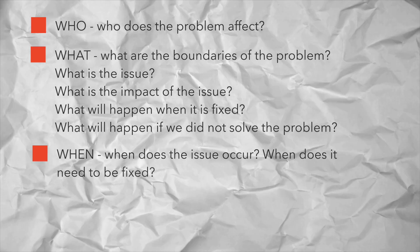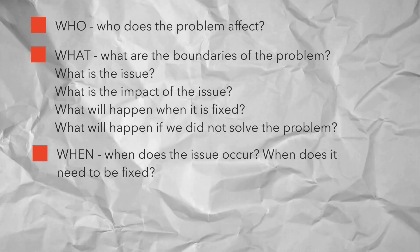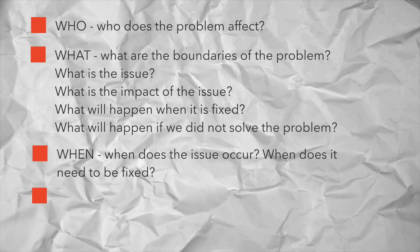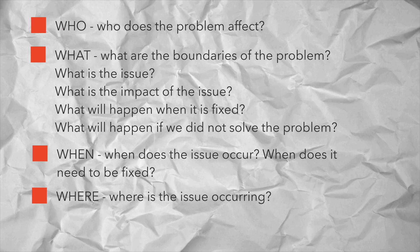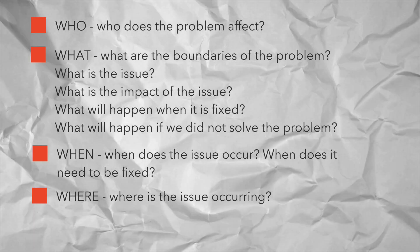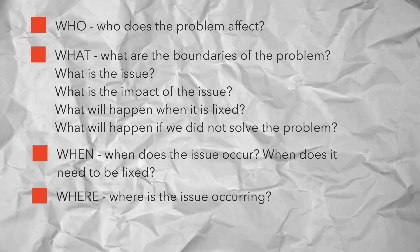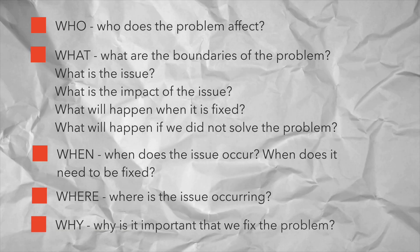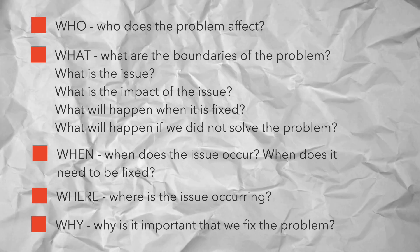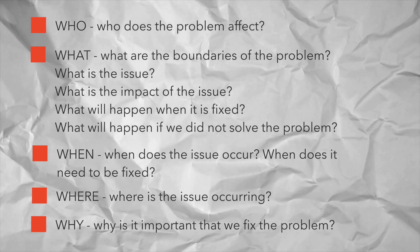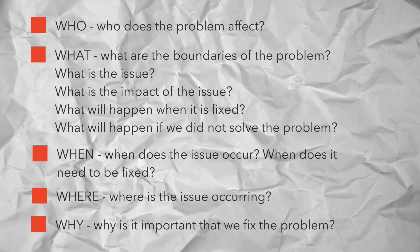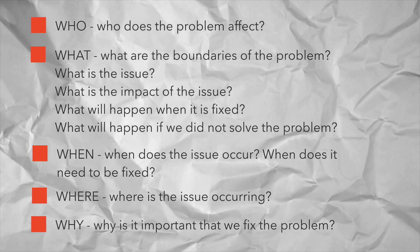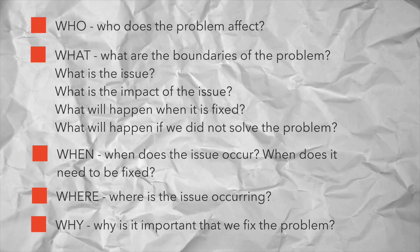When does the issue occur, and when does it need to be fixed? Where is the issue occurring — is it in certain locations, processes, products, or is it all over the place? Finally, why is it important that we fix the problem? What impact does it have on the business or customers, and what impact does it have on all stakeholders — employees, suppliers, customers, shareholders?